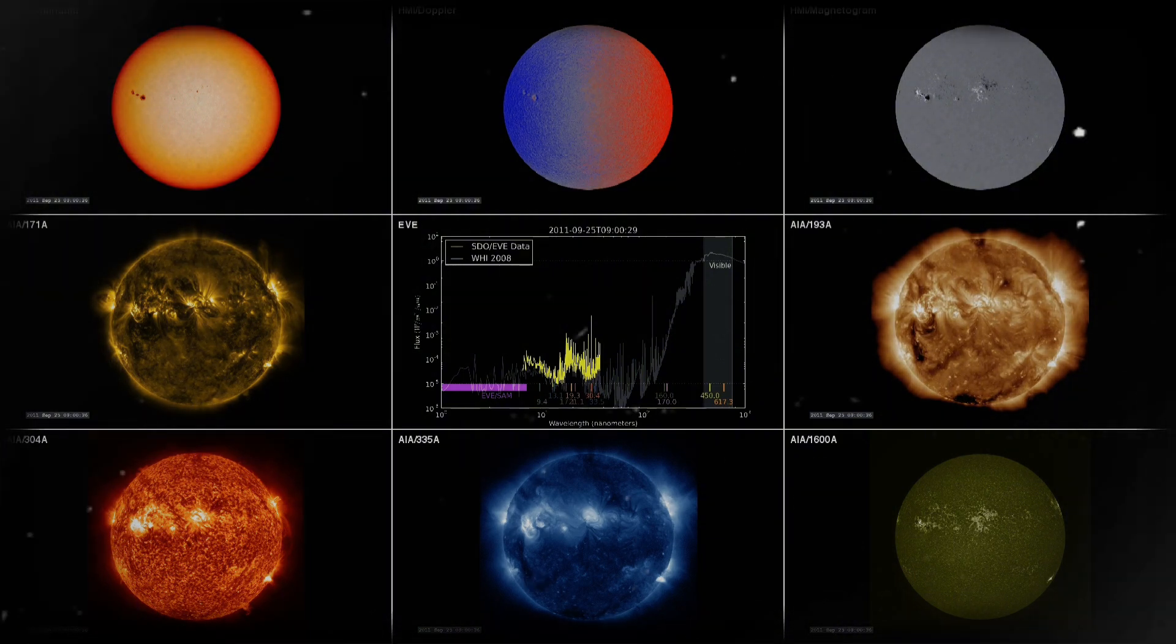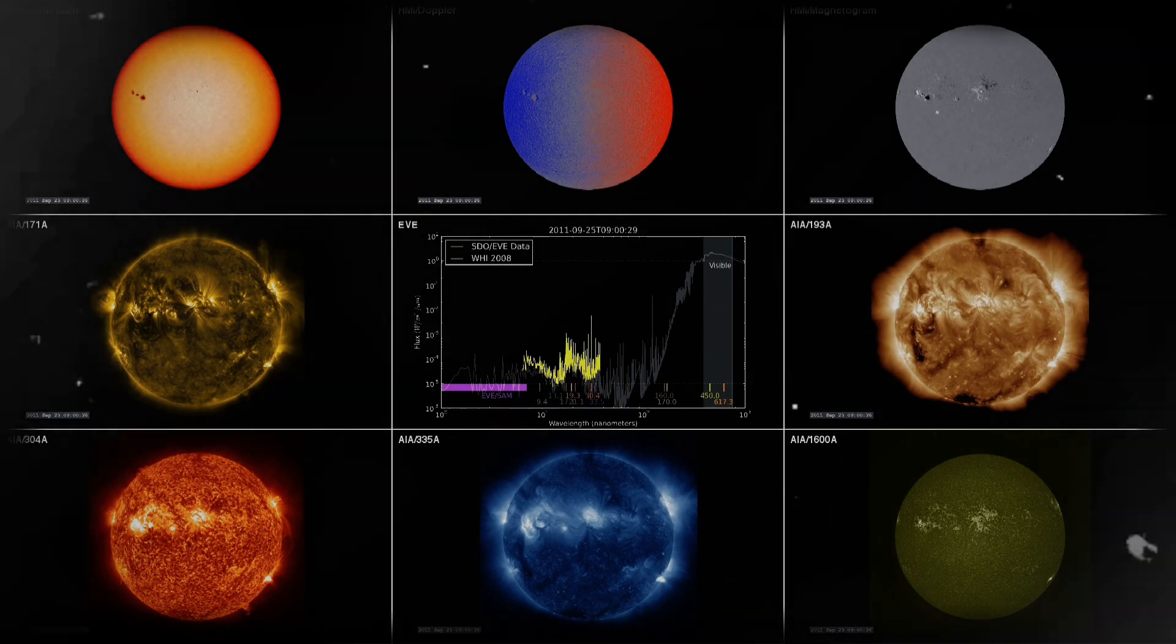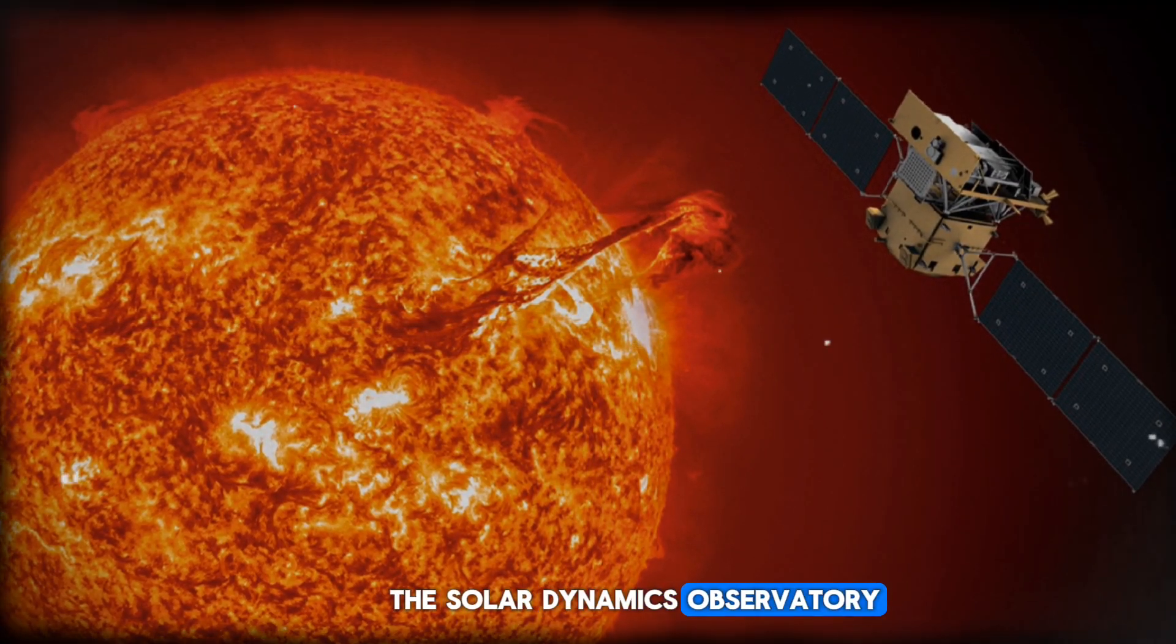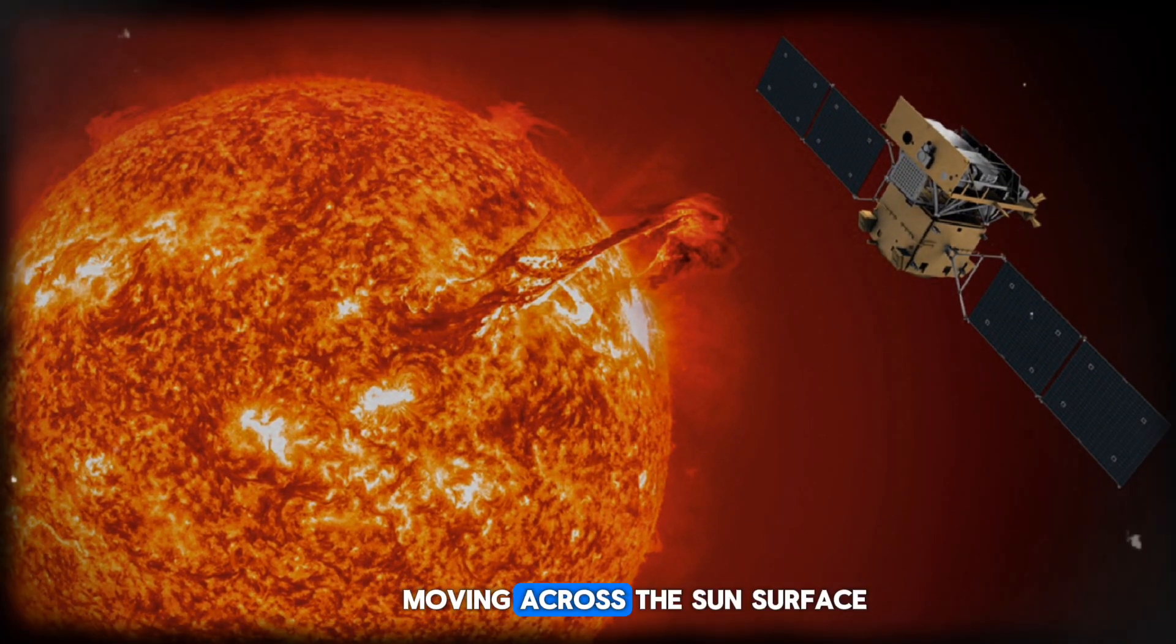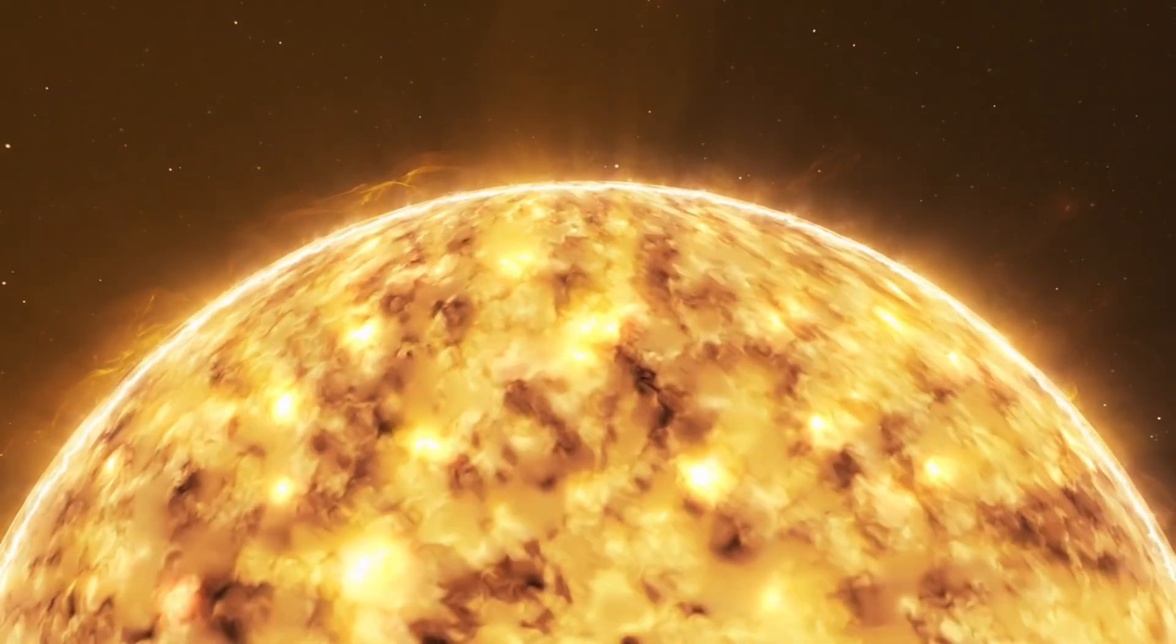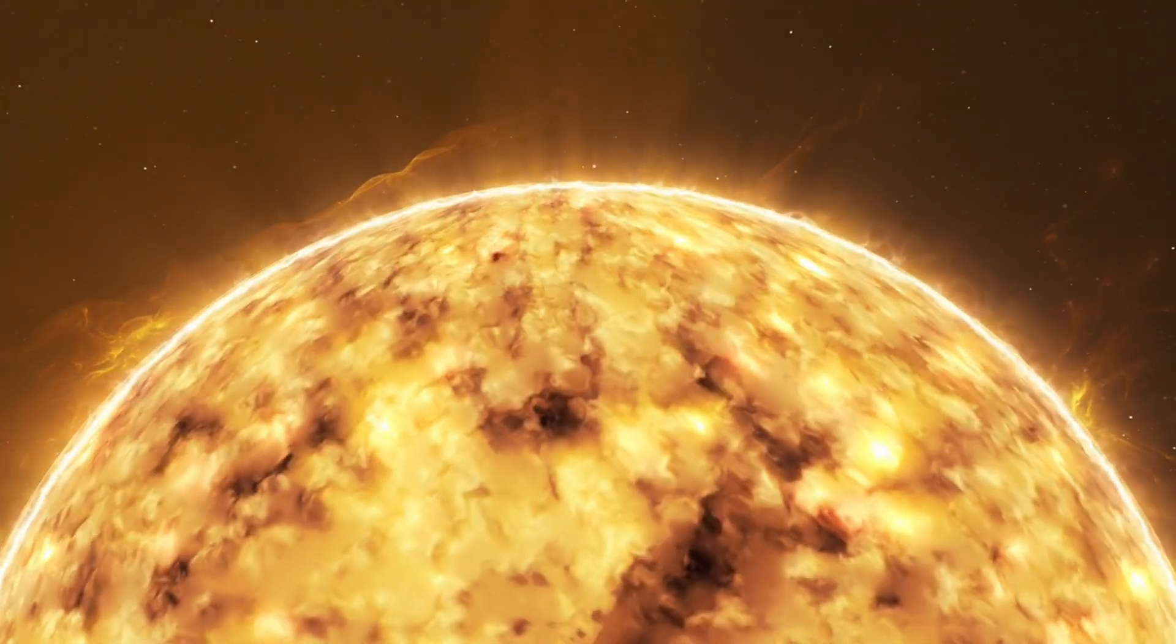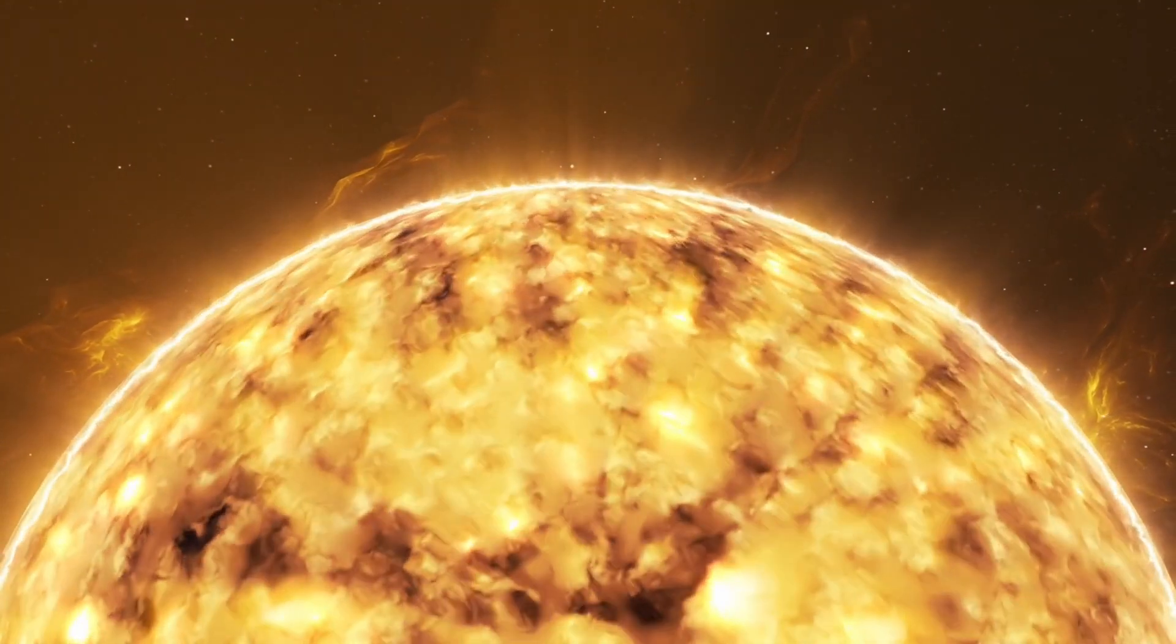Beyond this remarkable phenomenon, the Solar Dynamics Observatory has also documented uncommon and captivating passages of planets moving across the sun's surface. While inherently thrilling, these events play a more crucial role in solar science by providing distinctive opportunities to scrutinize the sun's atmosphere and its interactions with celestial bodies, thereby enriching our comprehension of solar dynamics.